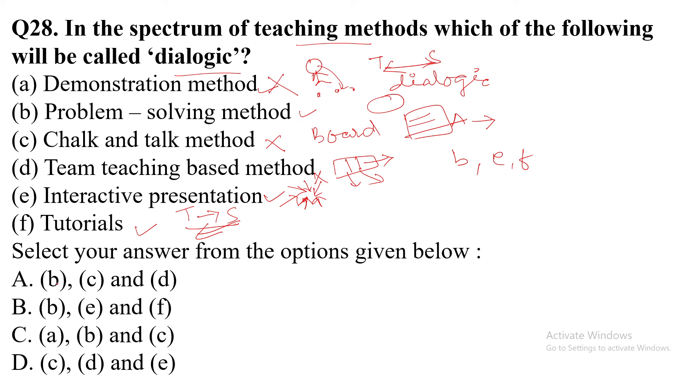Option A: B, C and D. B is correct, but C is not correct. So option A is eliminated.